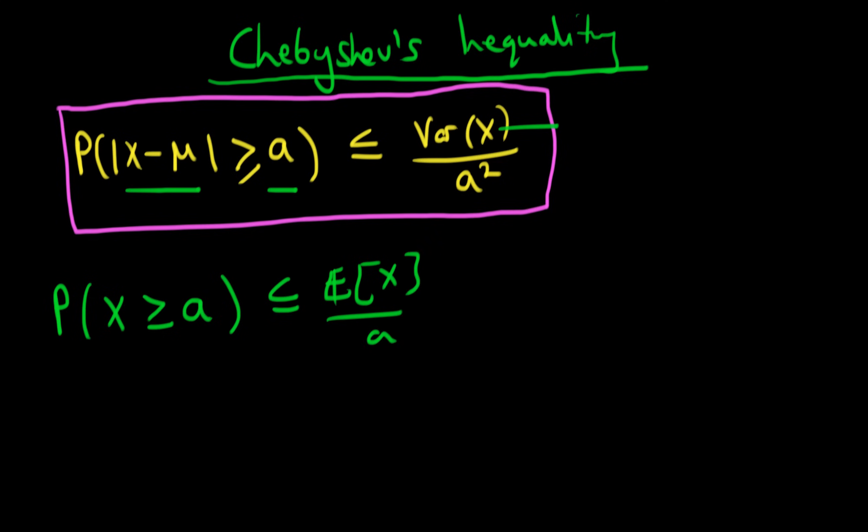So that's just what we proved last time, but there's nothing to stop us from replacing x in the above relationship with the modulus of x minus μ. That itself is a random variable, so there's no reason I can't just replace x in the above equation by modulus of x minus μ, because this above relationship Markov's inequality should hold for all random variables.